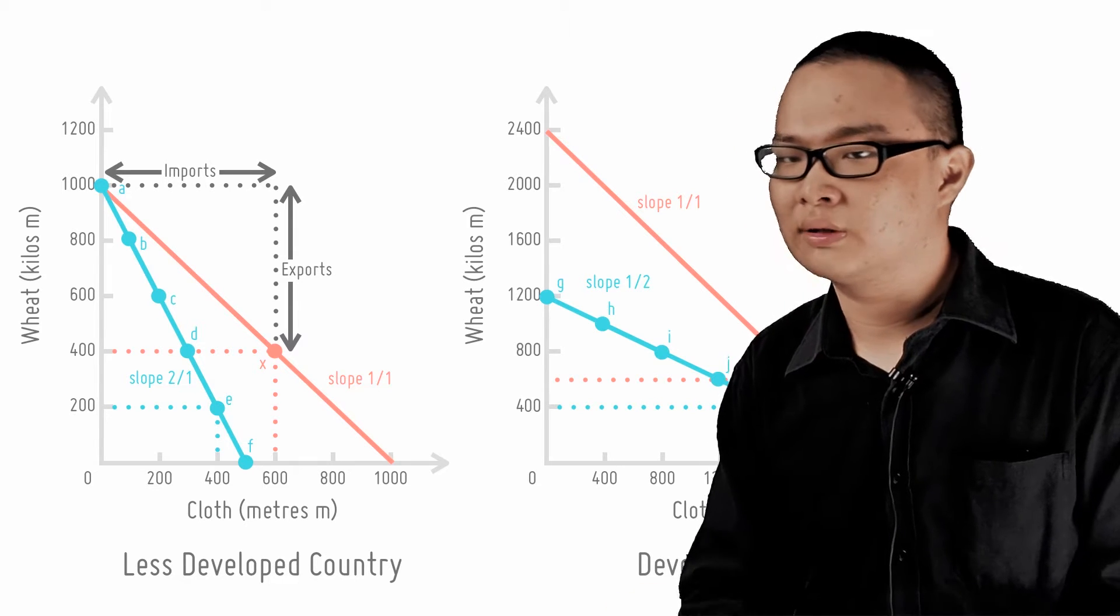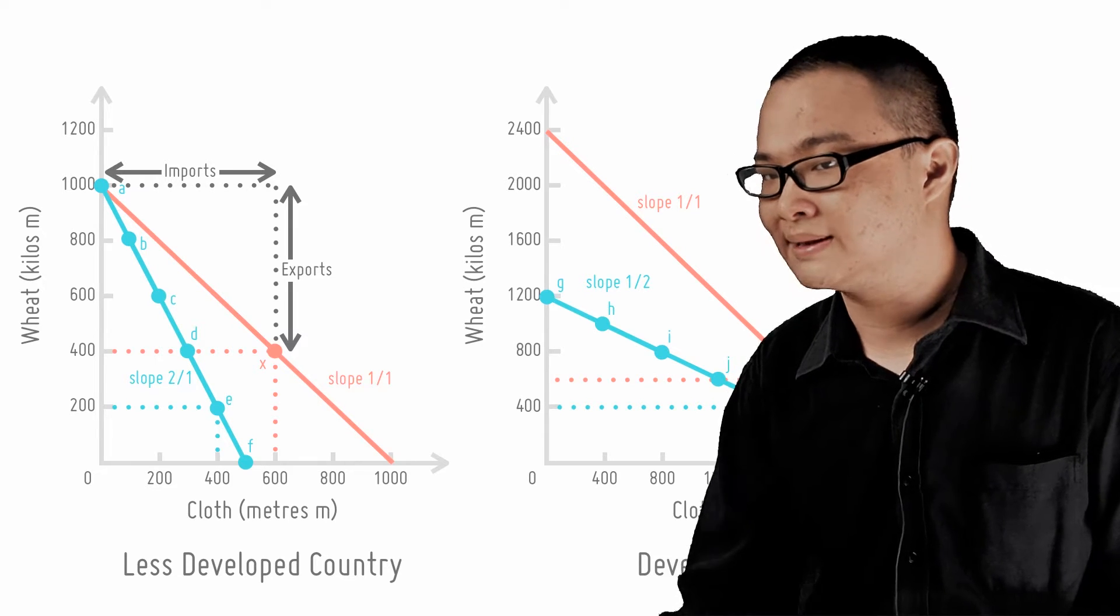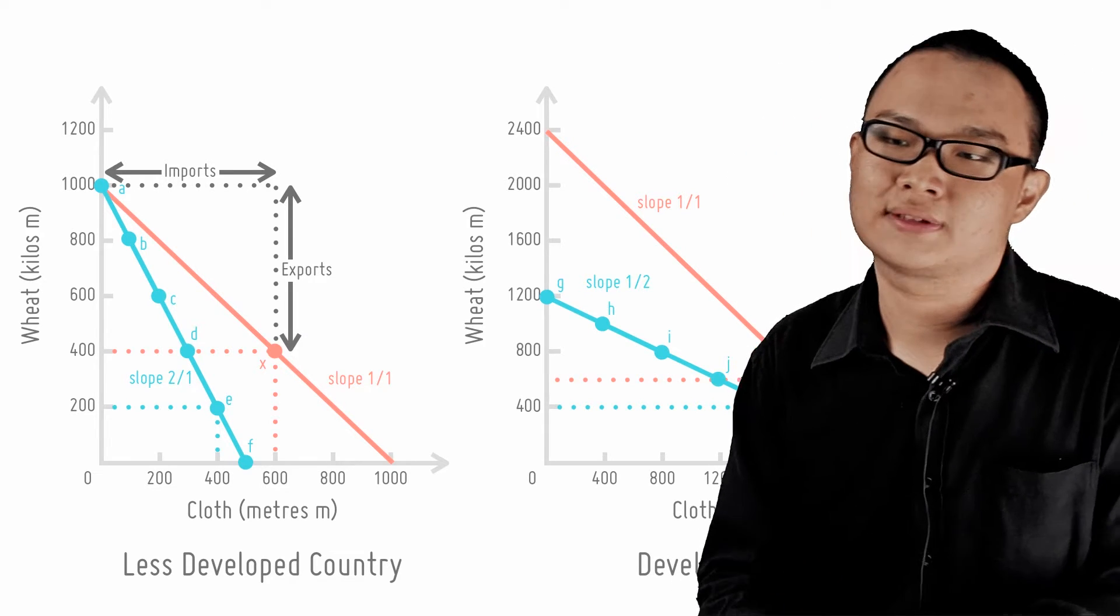A similar argument applies to the developed country. Trade enables countries to consume at a level beyond their PPC and thus increase their world standard of living.